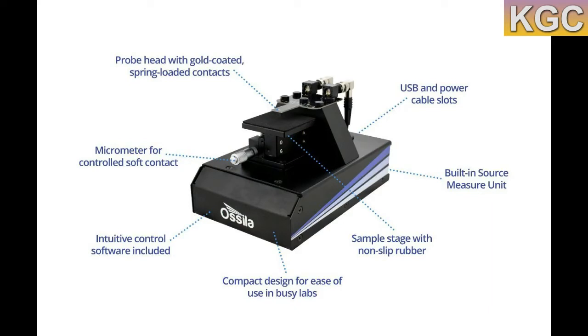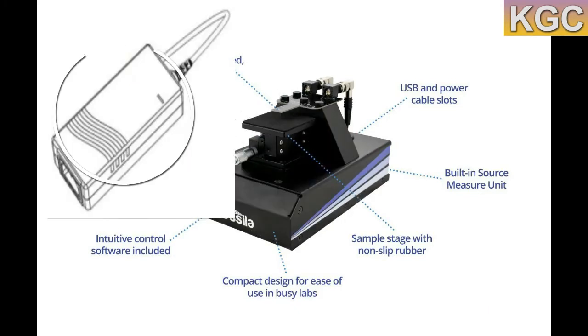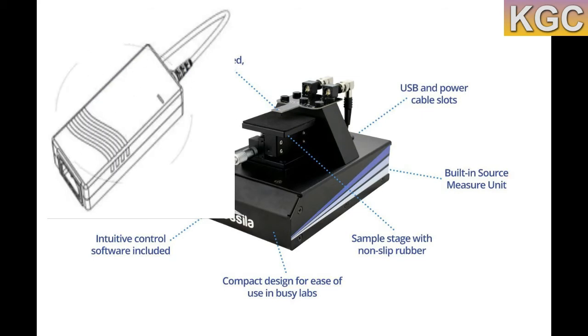The system includes three items: an Oscillus 4-point probe system, source measure unit, power adapter, and easy-to-use PC software, enabling more laboratories to measure sheet resistance for an affordable price.